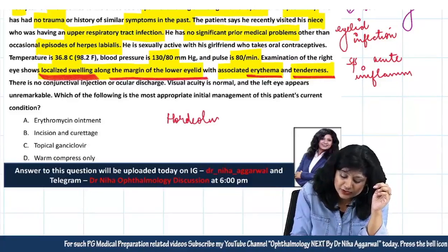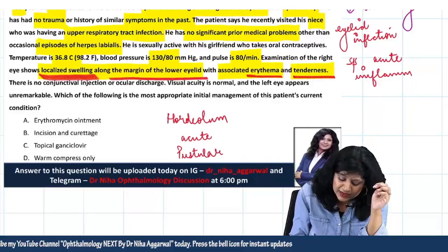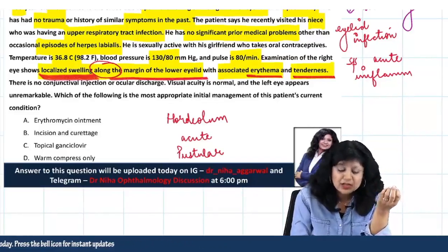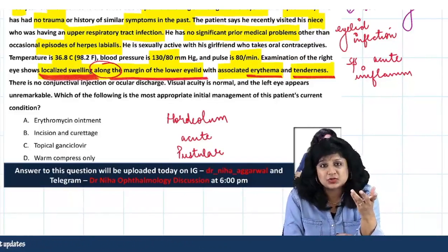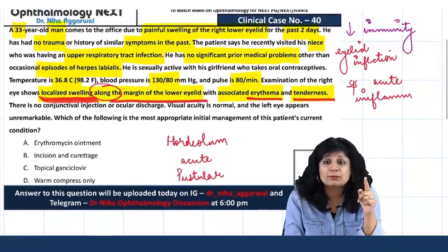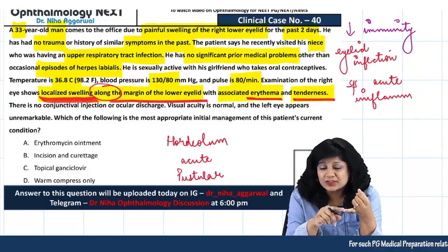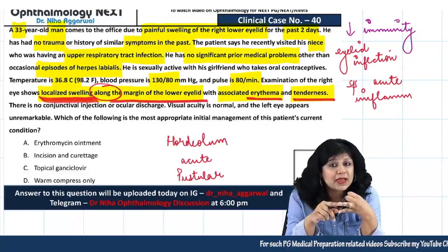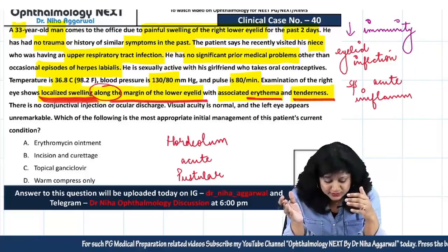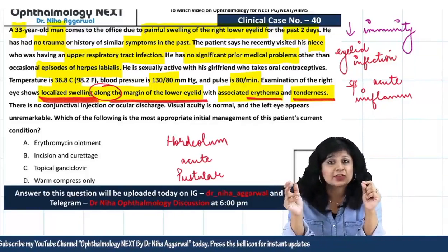Hordeolums are always acute in onset and they are pustular. Most probably this is an external hordeolum or a stye because they say it is along the margin, but we cannot say with 100% certainty whether it is external or internal. It is a hordeolum because this patient had exposure to upper respiratory tract infection — a focus of infection — and has recurrent herpes labialis indicating low immunity. The patient has acute onset with signs of inflammation, erythema, and tenderness, confirming this is an acute, not chronic, condition.